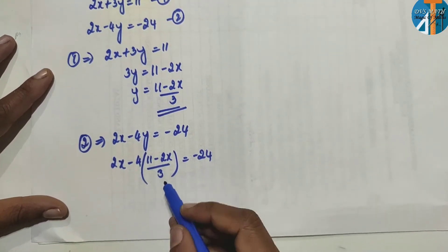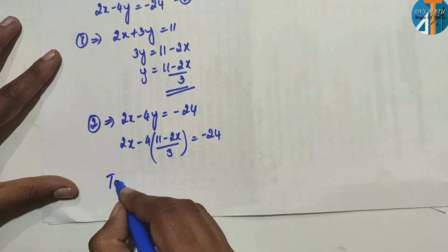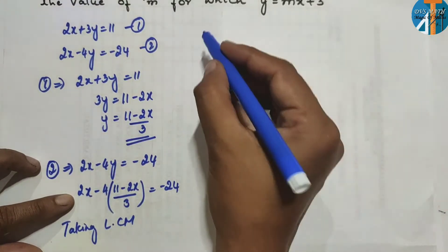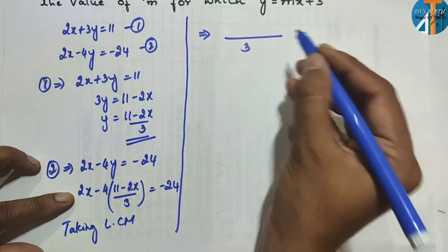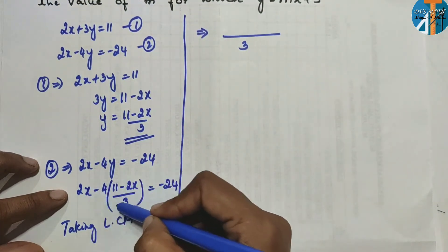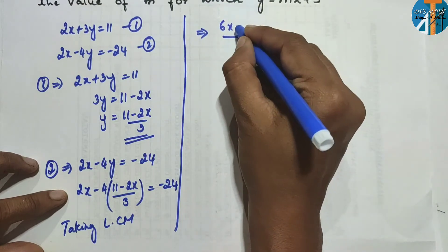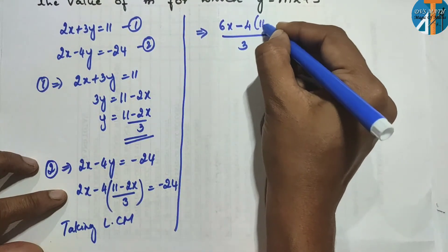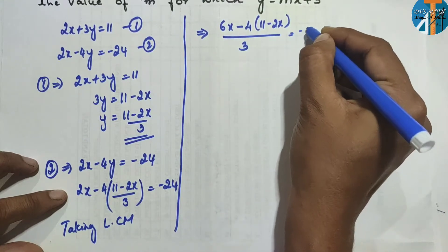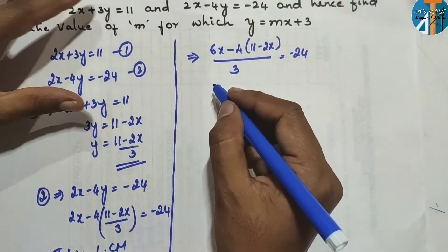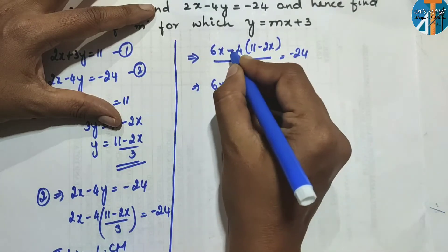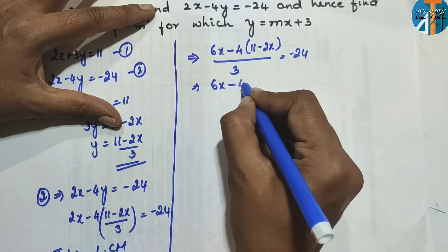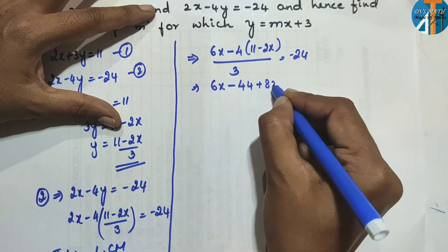Taking LCM — the LCM here is 3. Multiplying through by 3: 3 × 2x = 6x, and the 3s cancel leaving 4 × (11 − 2x). So we get 6x − 4(11 − 2x) = −24 × 3, which gives 6x − 44 + 8x = −72.